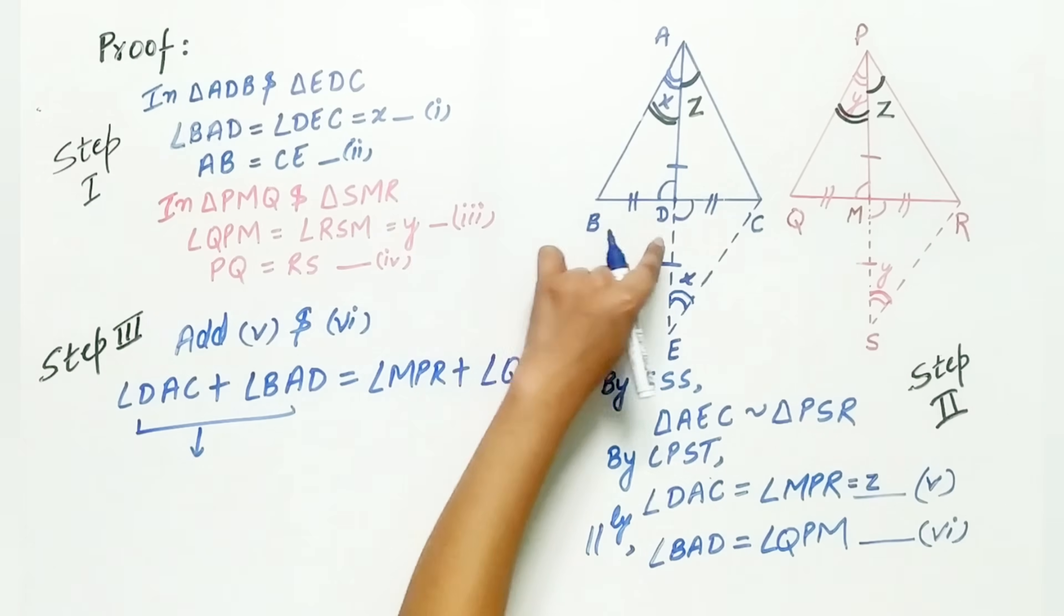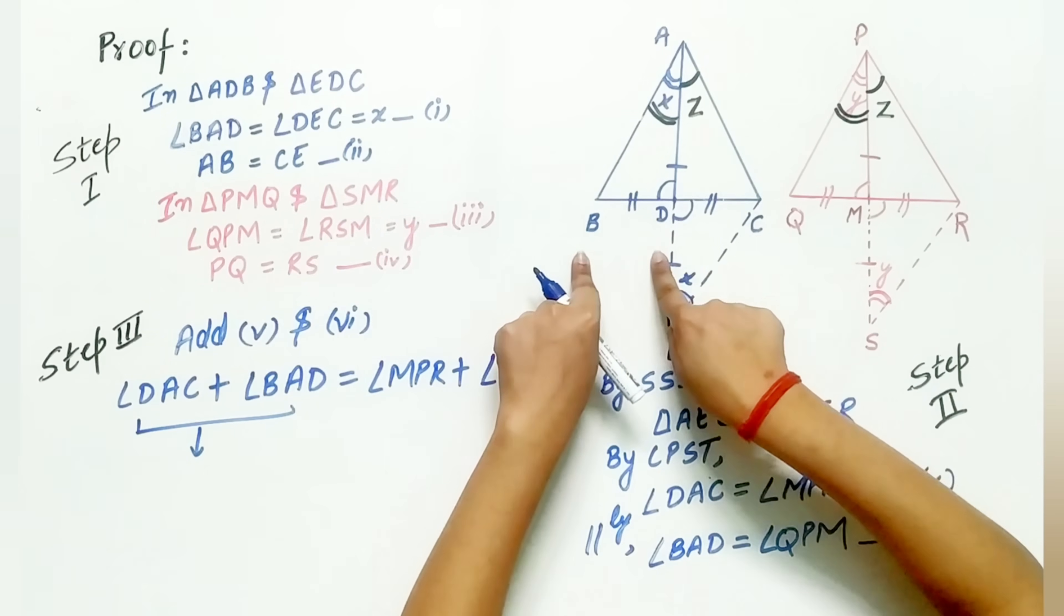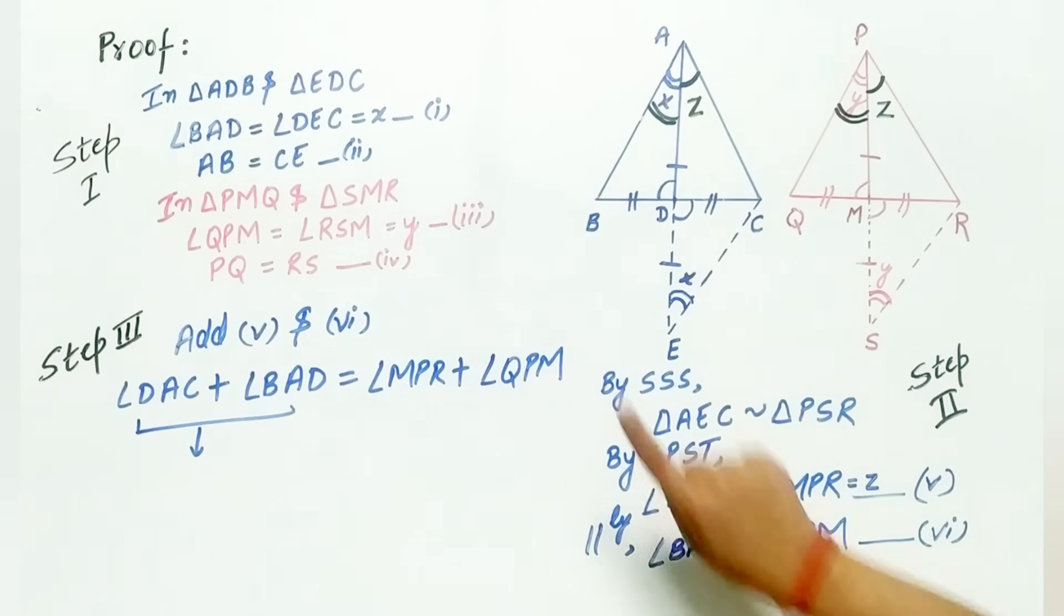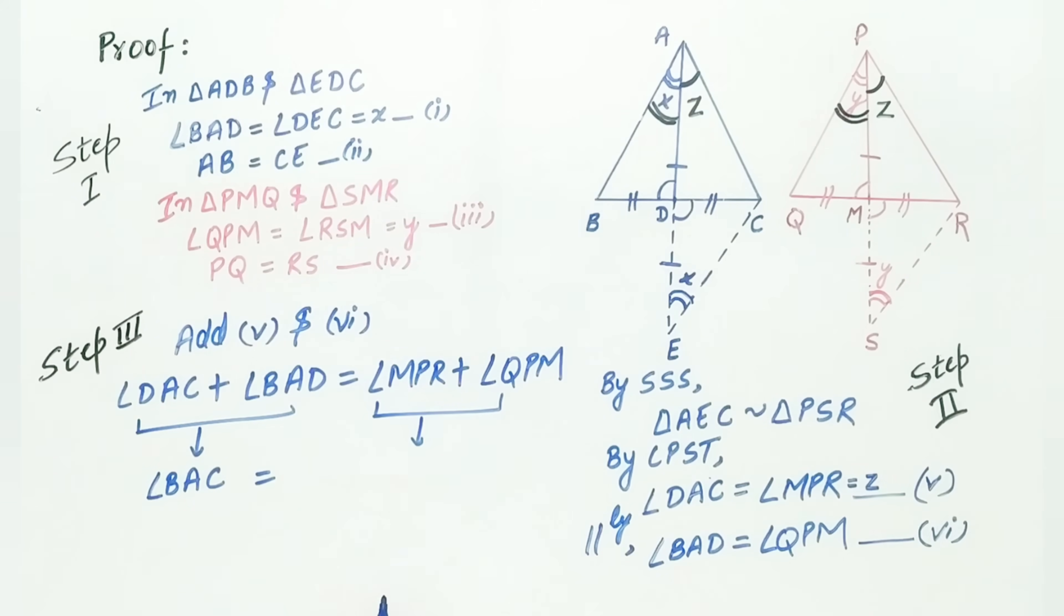is equal to angle MPR plus angle QPM. Angle DAC plus angle BAD is equal to angle BAC, and angle MPR plus angle QPM is equal to angle QPR. And mark it as the 7th equation.